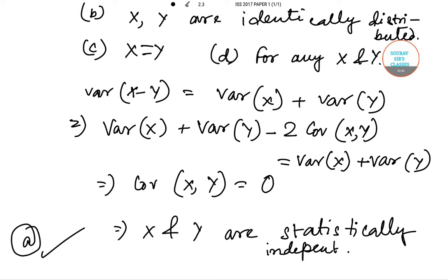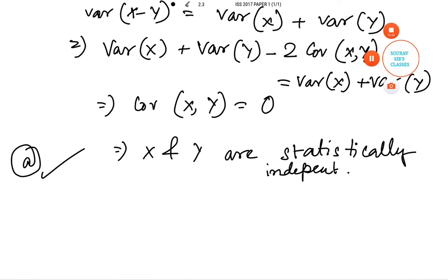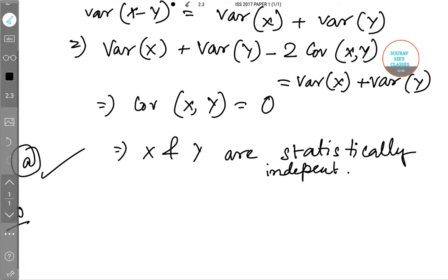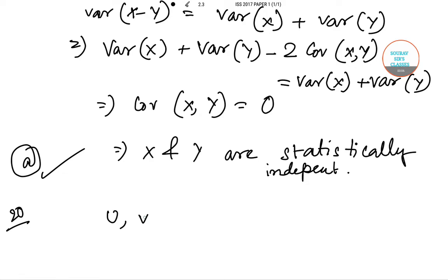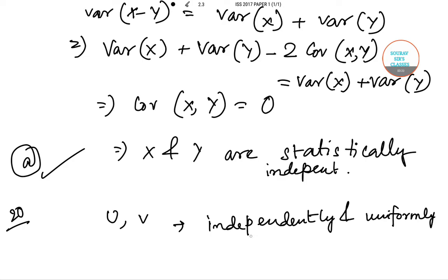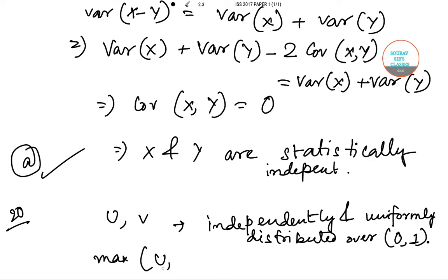Now let's move on to question number 20. U and V are independent and uniformly distributed on the interval [0, 1]. What will be the distribution of the maximum of U and V? We are given four options, so let's see what the answer will be.